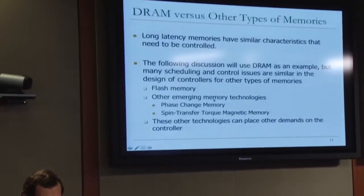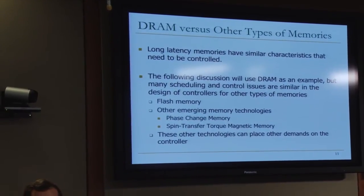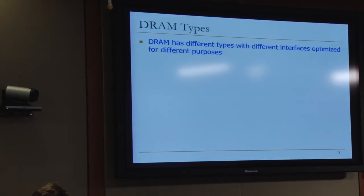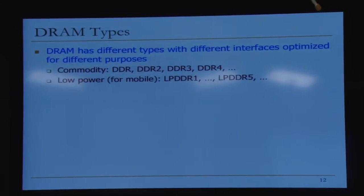Before I go into controllers, I'll tell you a little bit about DRAM types. DRAM actually differs — it has different types with different interfaces optimized for different purposes. You can actually buy different types of DRAM today. Commodity DRAM that you have in servers and desktops is more optimized for higher performance, whereas mobile DRAM — LPDDR — is more optimized for low power. What you have in your laptops is low-power DRAM. There's also DRAM optimized for high bandwidth, like graphics DRAM, and low latency. Low latency tends to be very expensive.